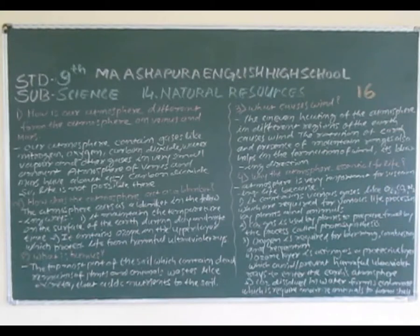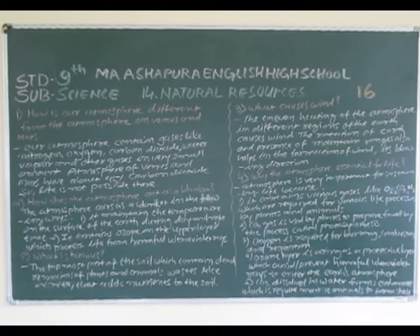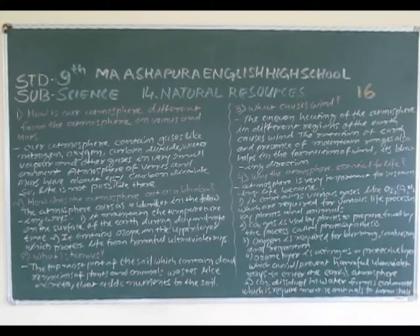Why is the atmosphere essential for life? Atmosphere is very important for sustaining life because it contains various gases like oxygen, carbon dioxide and nitrogen, which are required for various life processes by plants and animals. Carbon dioxide gas is used by plants to prepare food by the process of photosynthesis.